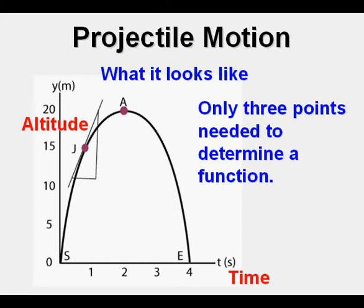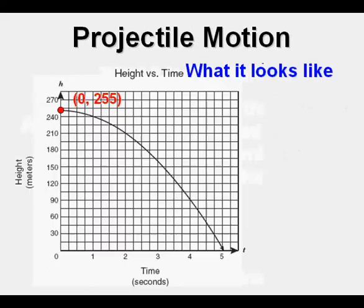Here we have a graph of projectile motion as an object is dropped from a height of 255 meters.